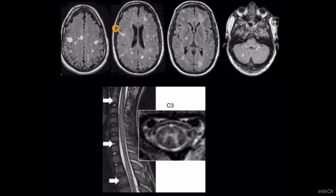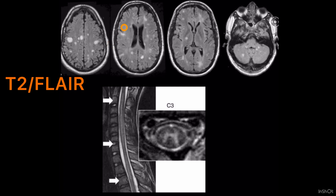The other salient features we see in ADEM are in the brain. We will see multiple extensive T2 hyperintensities scattered throughout the white matter — even bilateral thalami, brainstem, and bilateral cerebellum. These areas will also be involved.